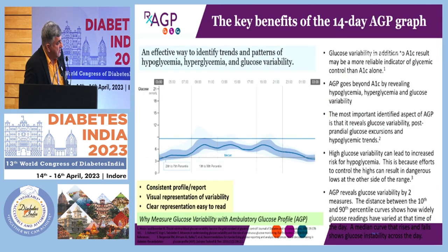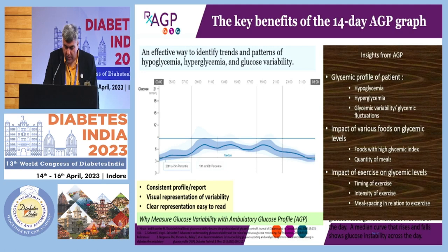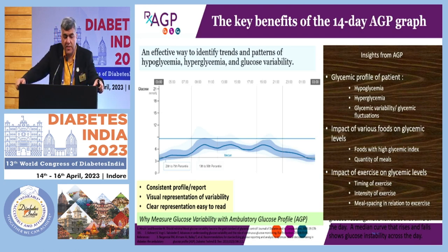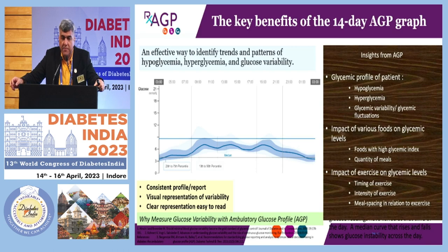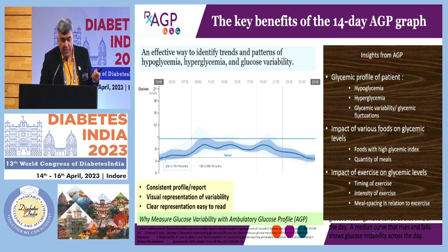The key benefits of this graph are that AGP goes beyond A1c, identifies patterns, identifies variability, and shows the impact of various foods on glycemic levels. We as believers are questioned by CGM skeptics about why you want to do CGM in patients with pre-diabetes or early diabetes. I think one of the best places to use CGM is for people who are pre-diabetic or have early diabetes — to actually see what is going to impact their sugars in a more favorable way. That itself can be a game changer for many of them.